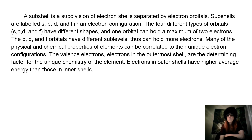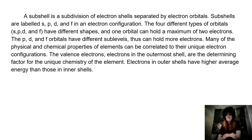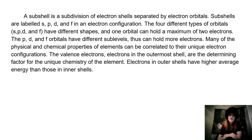The four different types of orbitals — S, P, D, and F — have different shapes, and one orbital can hold a maximum of two electrons. The P, D, and F orbitals have different sublevels, thus can hold more electrons. Many of the physical and chemical properties of elements can be correlated to their unique electron configurations. The valence electrons, electrons in the outermost shell, are the determining factor for the unique chemistry of the element. Electrons in outer shells have higher average energy than those in inner shells.